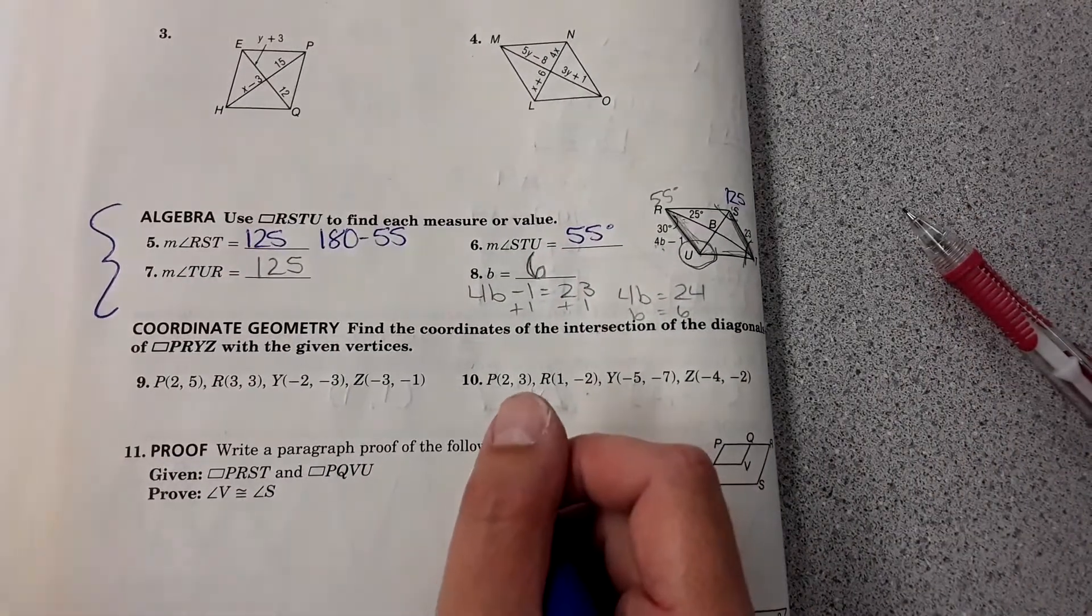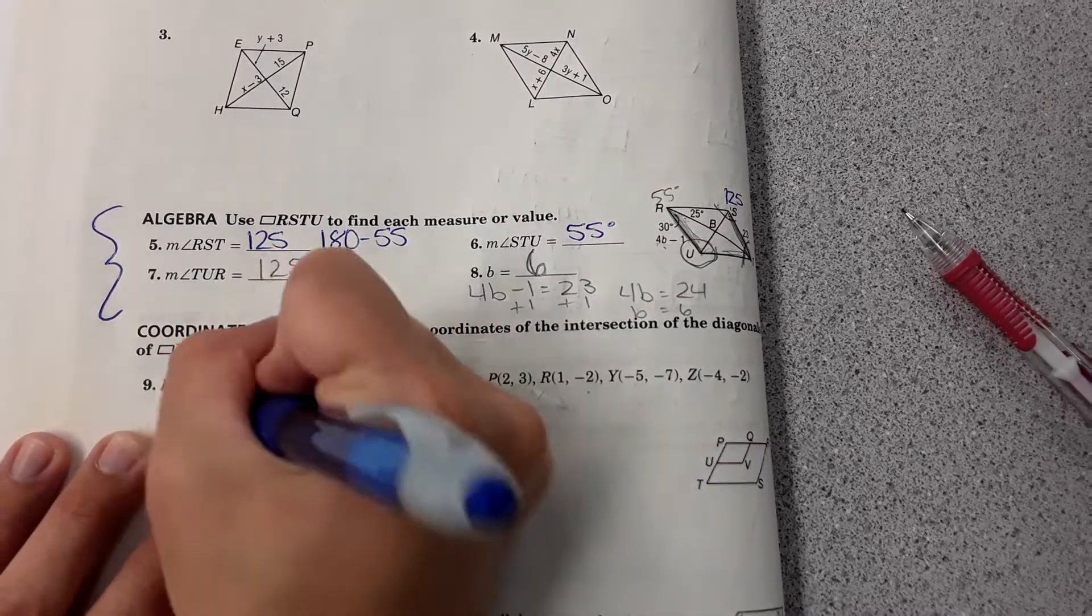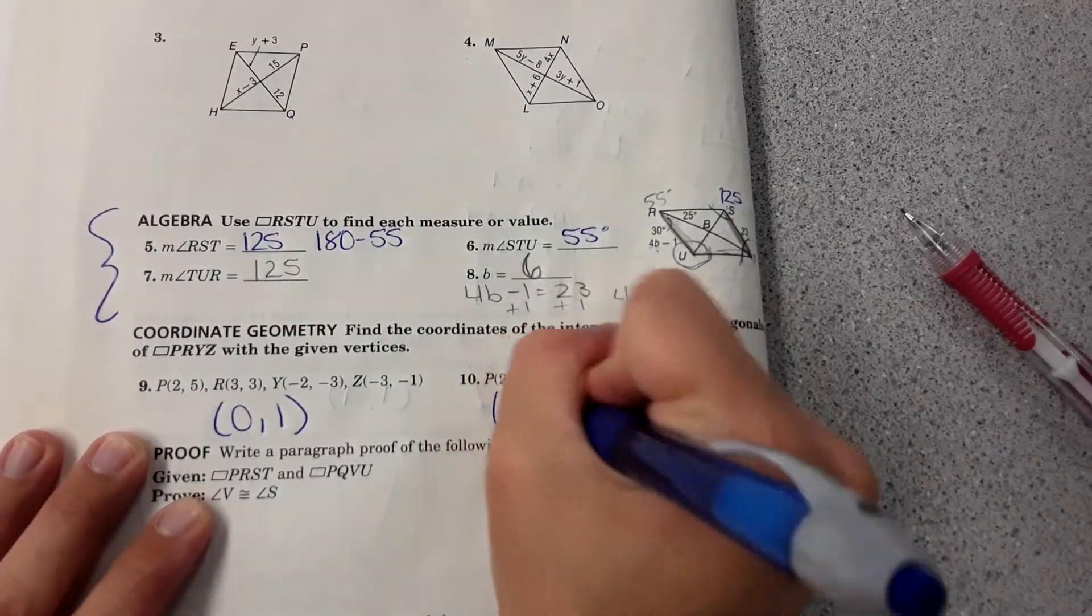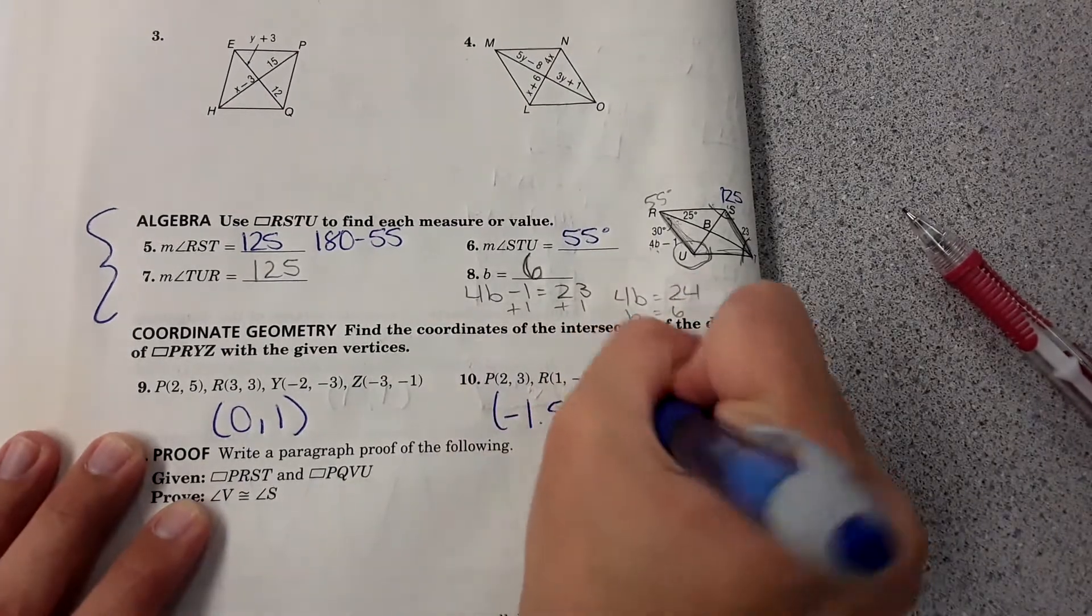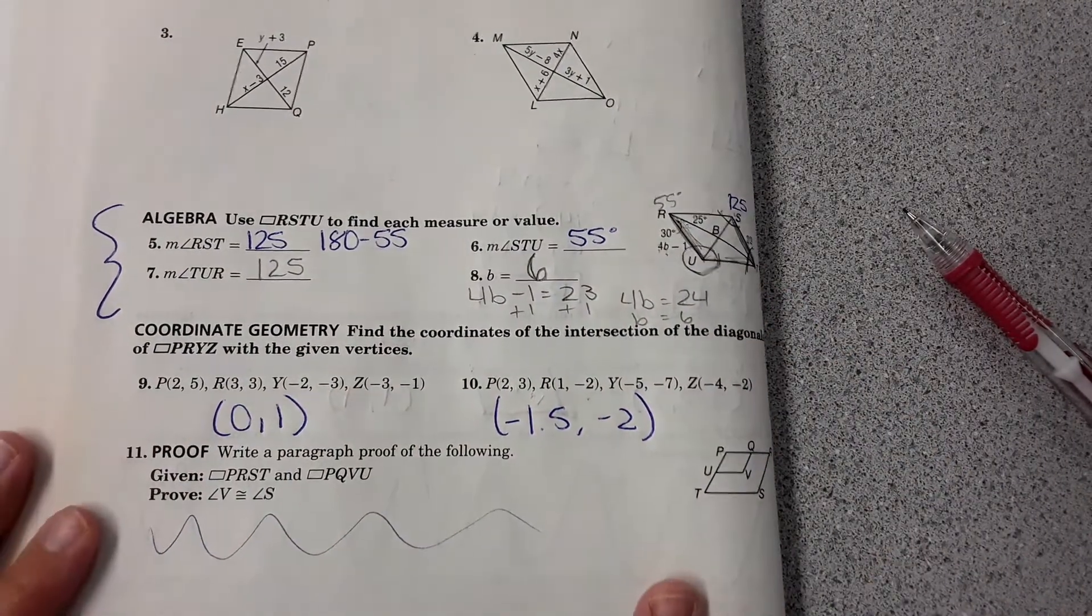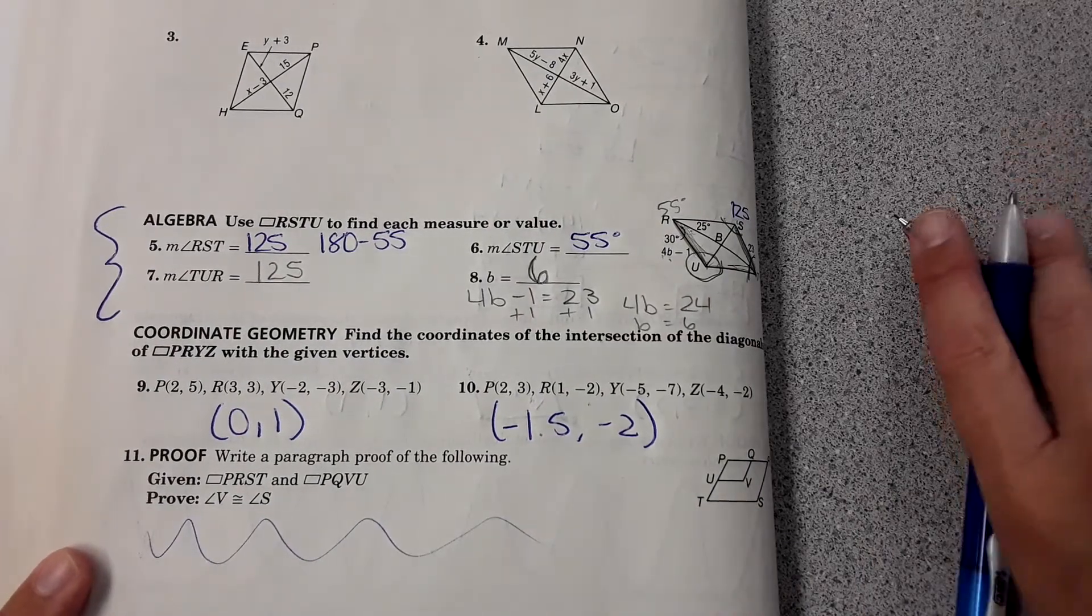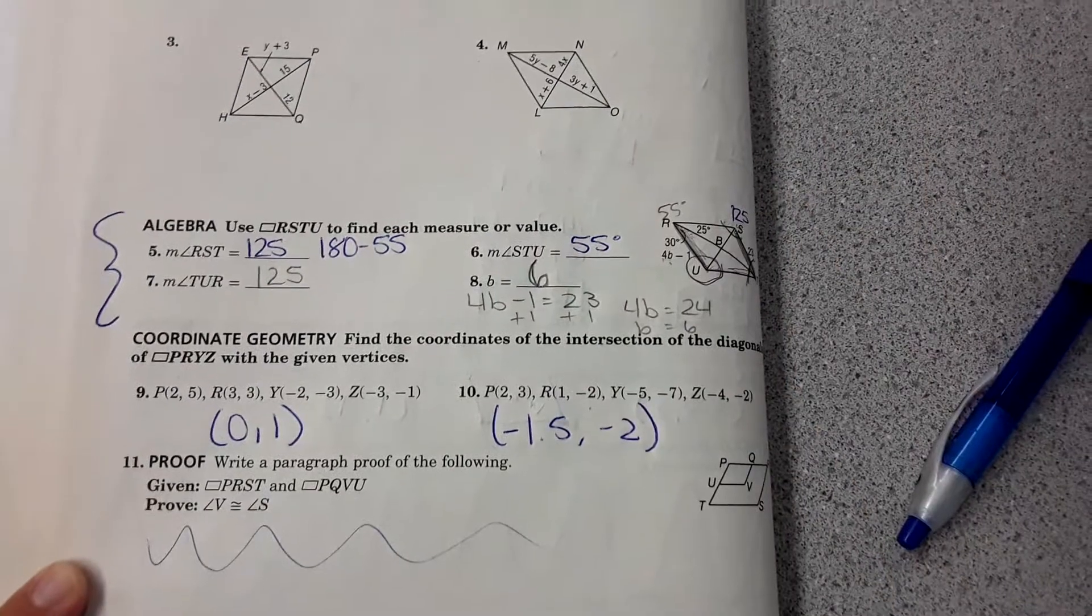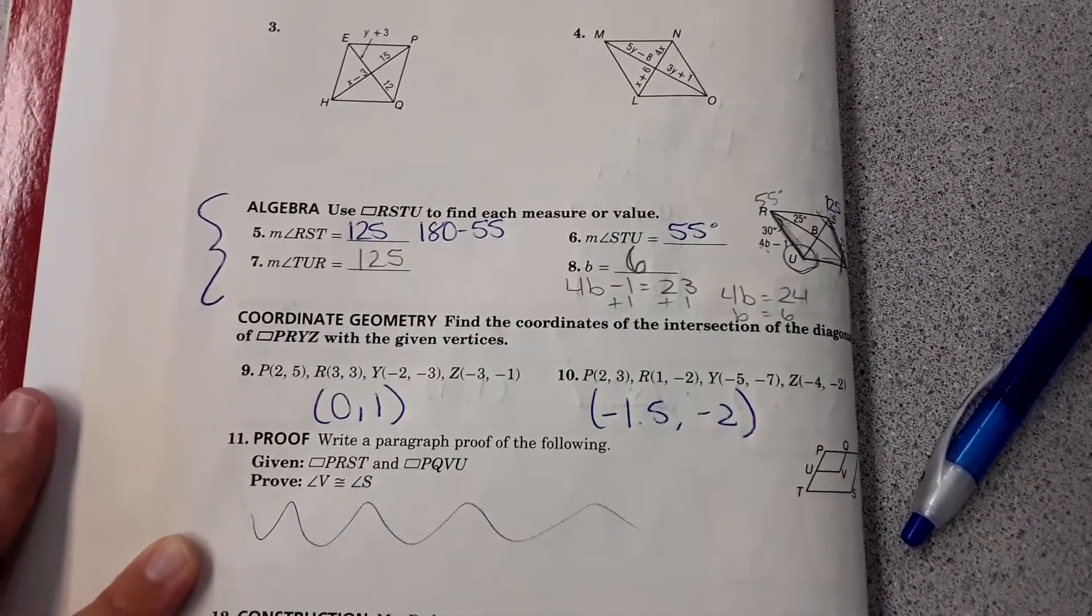Okay, 9 and 10. Those are the ones that you might have to graph. The intersection for this one is at 1. This one is at negative 1.5, negative 2. We ain't going to worry about the proofs. And that's it. So that should give you a good base of what to expect in the homework. Just like yesterday, the homework is on Schoology.